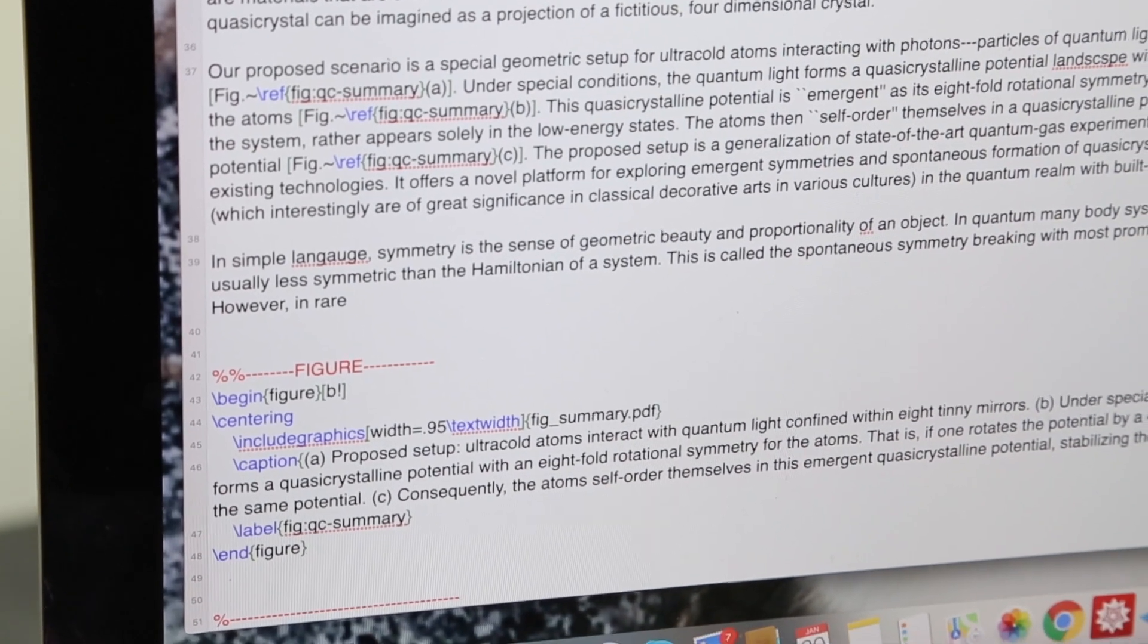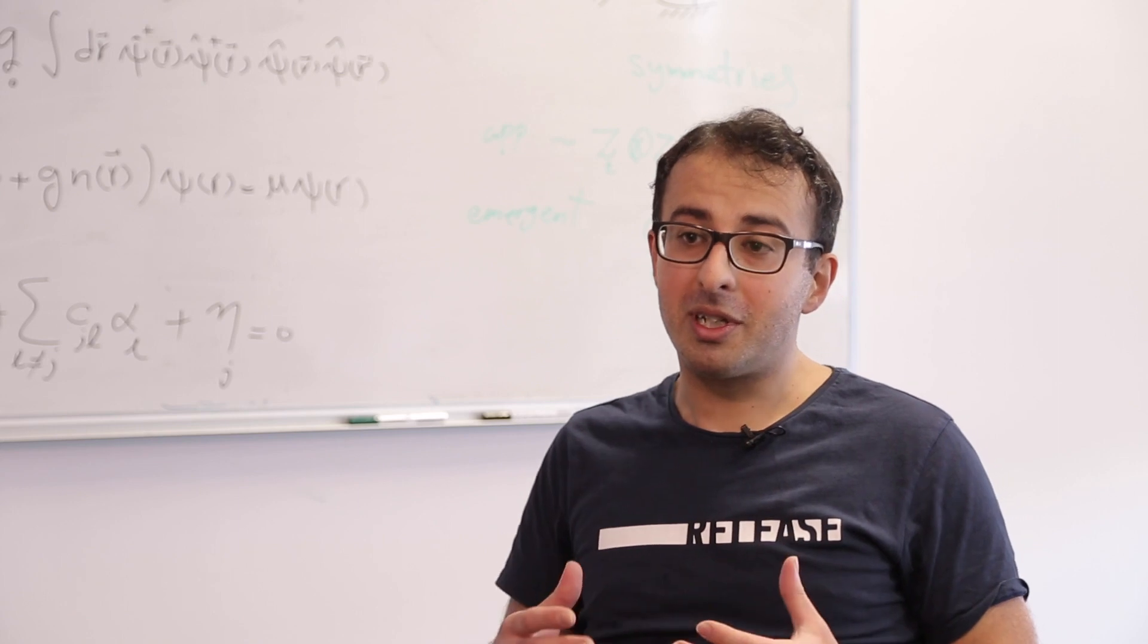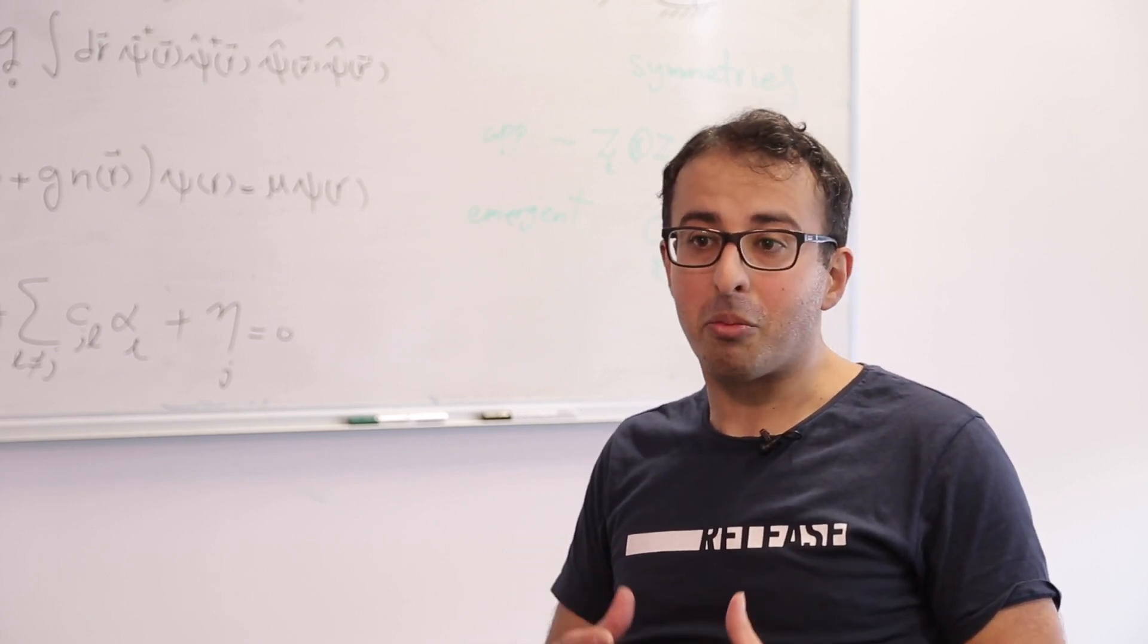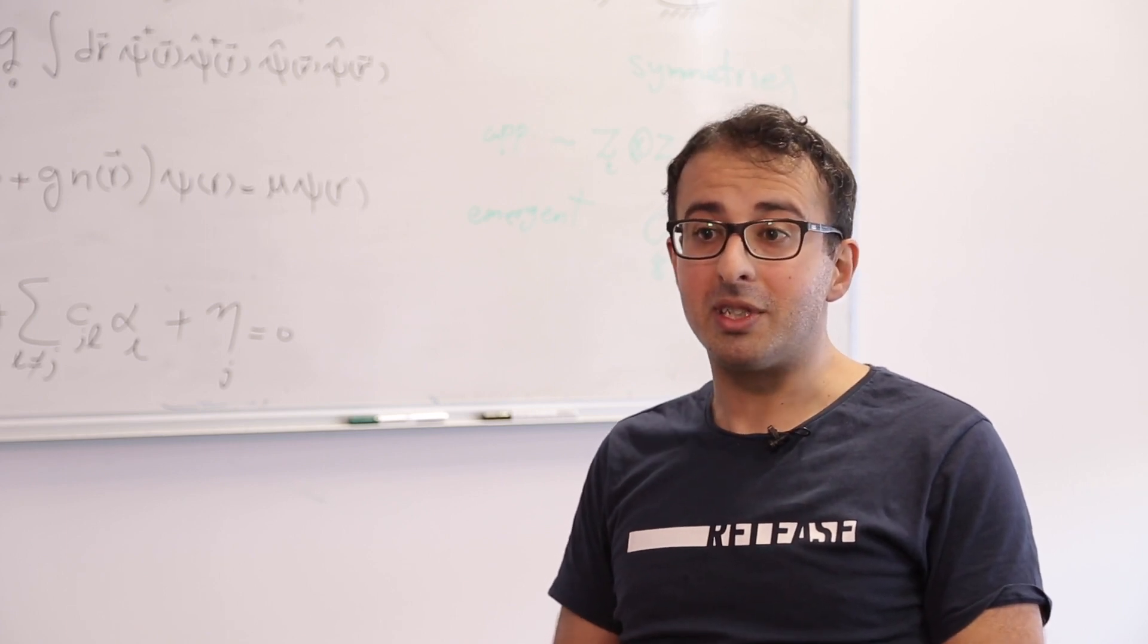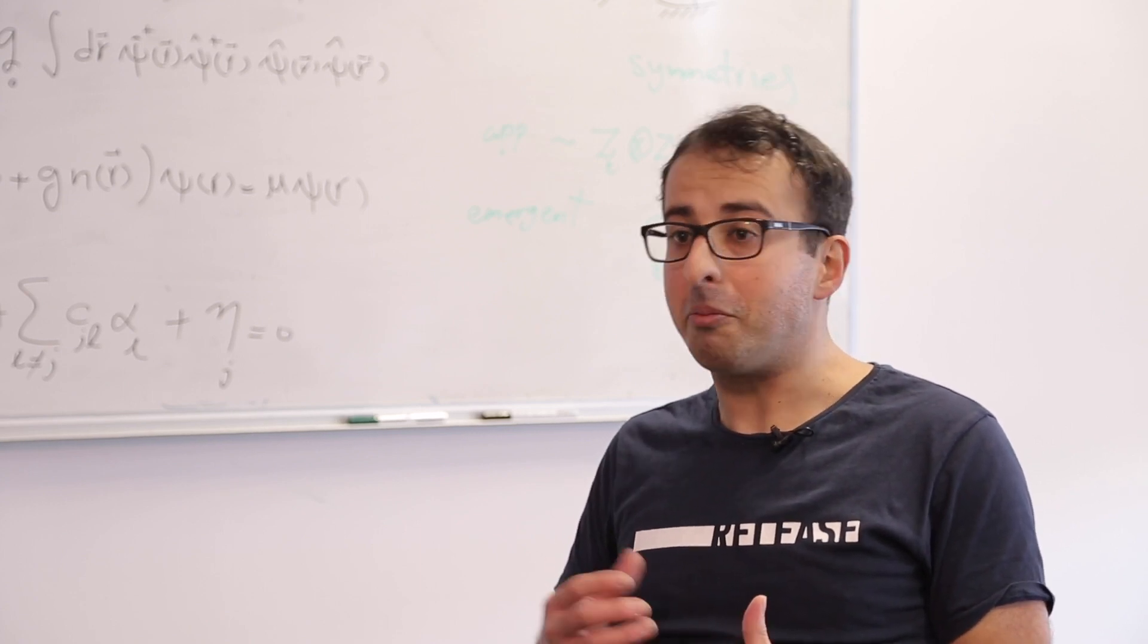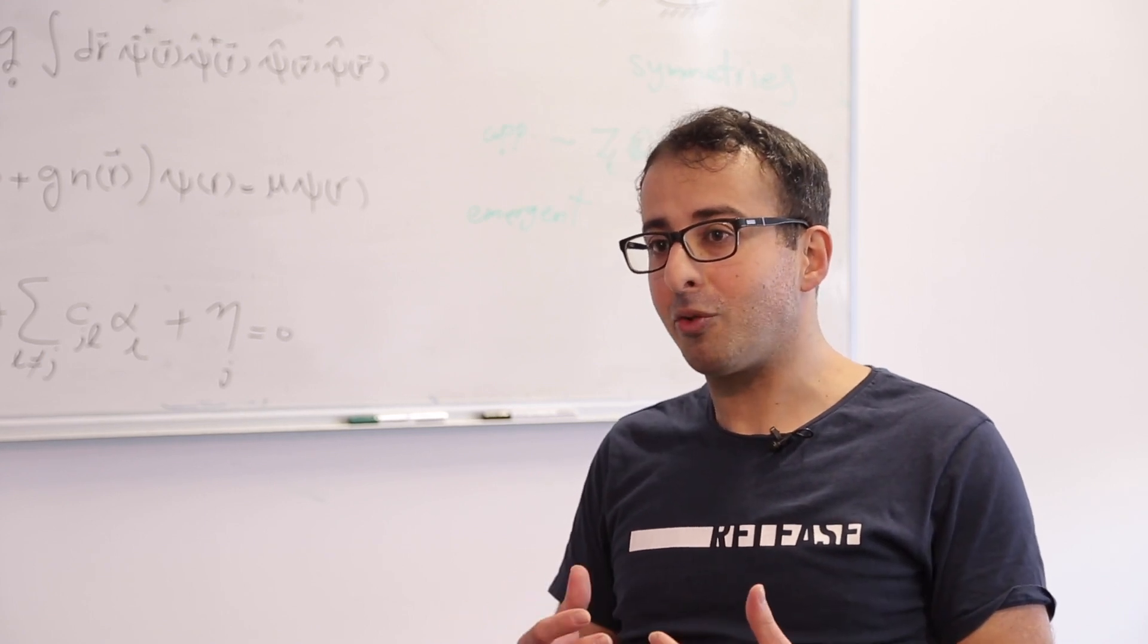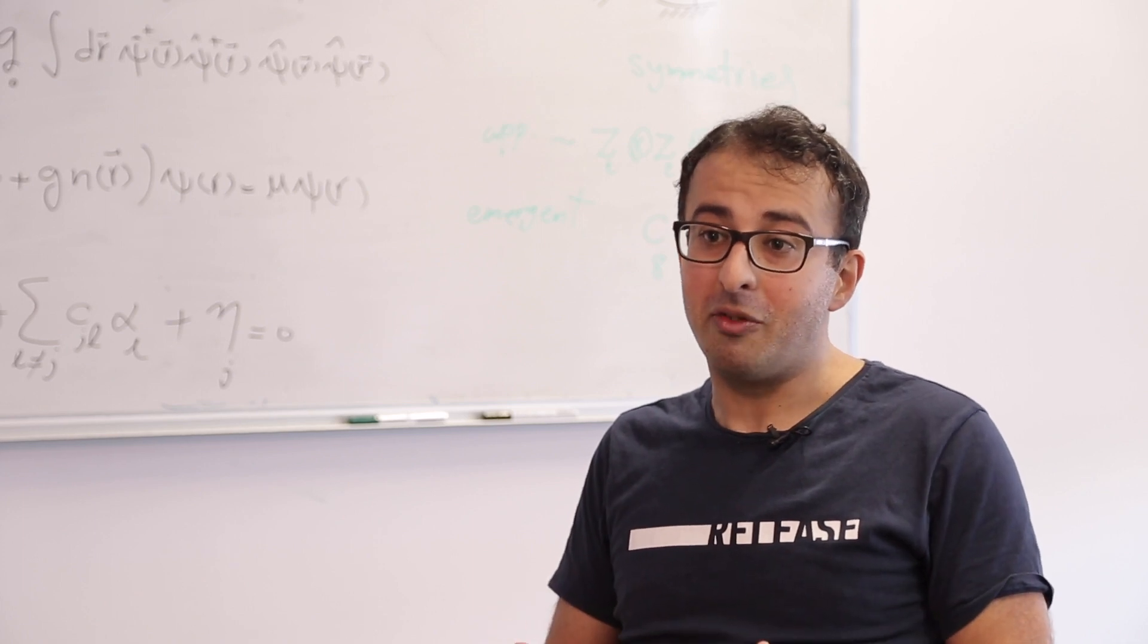But with emergent symmetry, it is more symmetric than the Hamiltonian. Under the special condition in our proposal, a quasi-crystal potential with the eight-fold rotational symmetry emerges in the low-energy physics. So again, this is an emergent symmetry in our proposal because the Hamiltonian of the system doesn't have this eight-fold rotational symmetry, but it is just this low-energy states which have this.